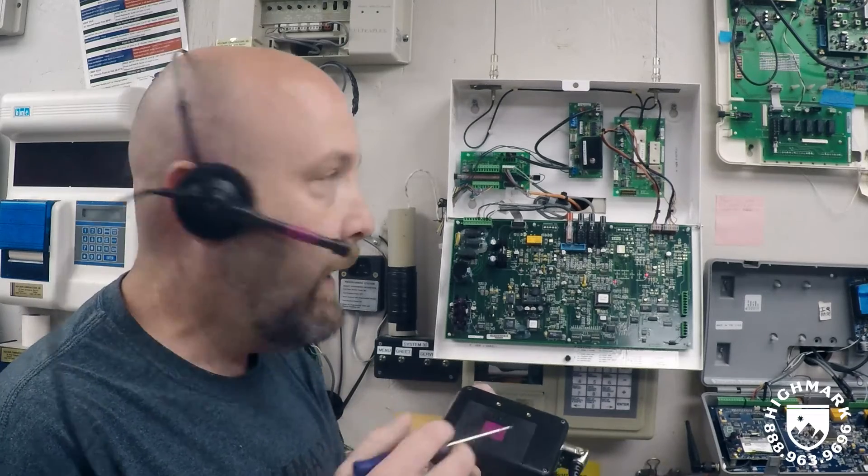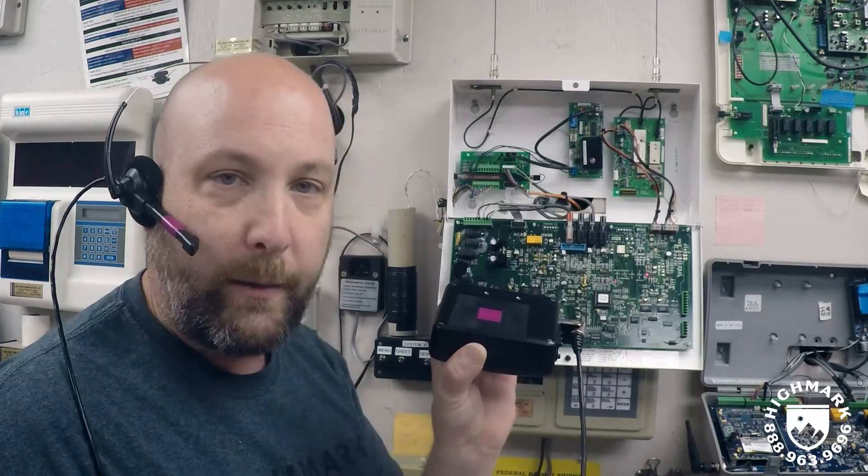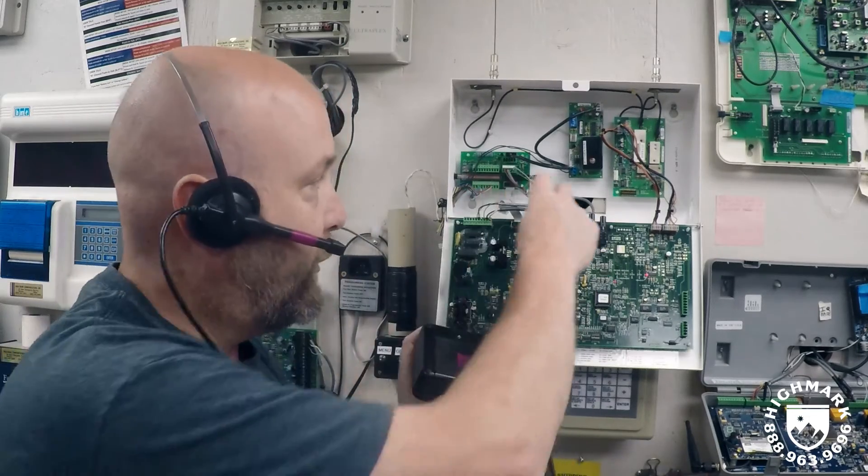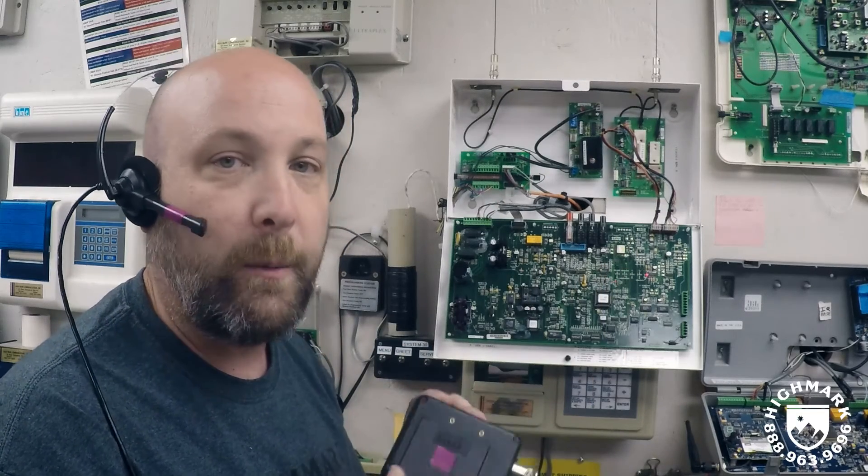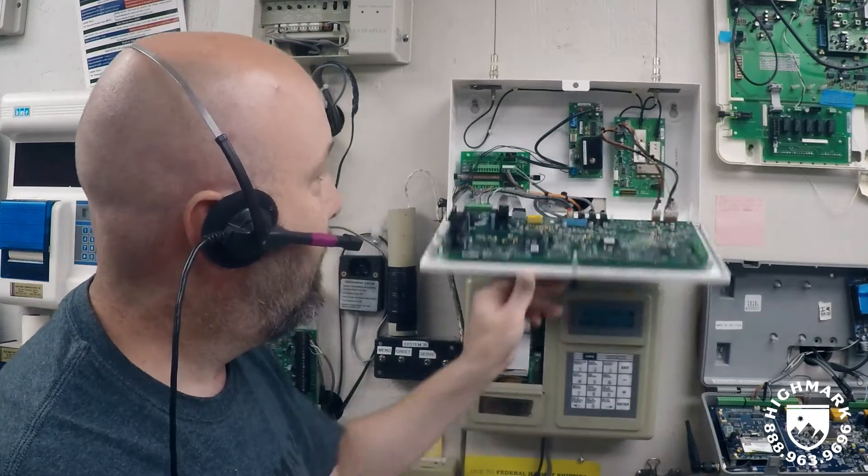These dip switches will match the dip switches that you find inside the comm. If they are correctly configured—in other words, the comm matches what you see here on the radio board of the base station—then it'll be on the right frequency and will communicate.